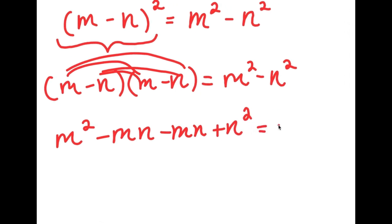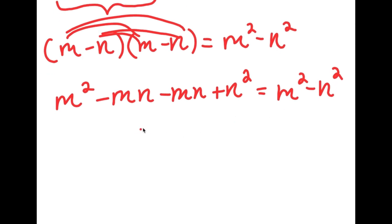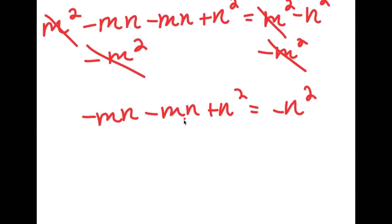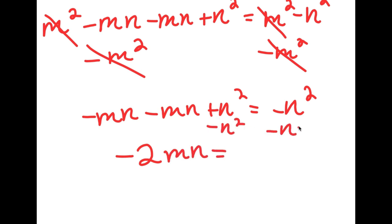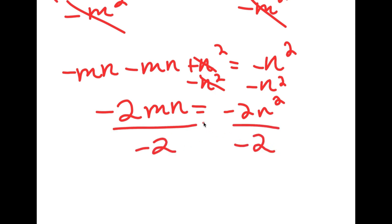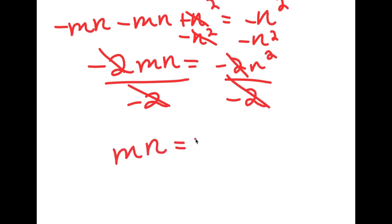So the expanded left side is m squared minus 2mn plus n squared, equal to m squared minus n squared. Subtracting m squared from both sides cancels those terms, leaving negative 2mn plus n squared equals negative n squared. Subtracting n squared from both sides gives negative 2mn equals negative 2n squared. Dividing both sides by negative 2 gives mn equals n squared.